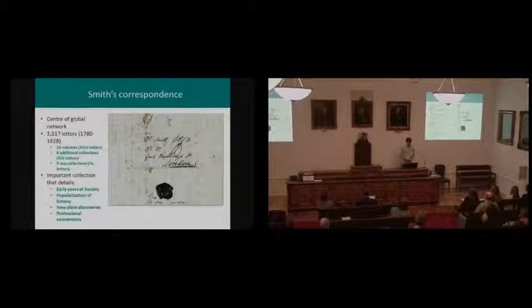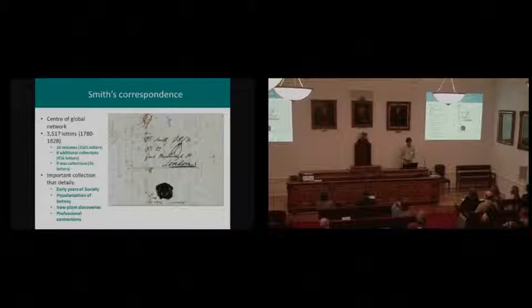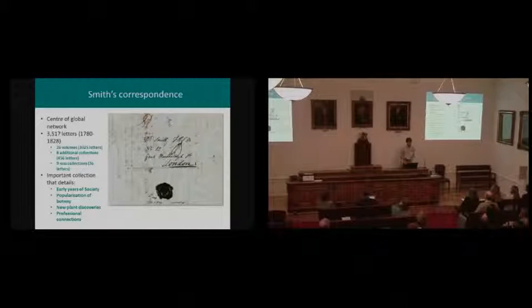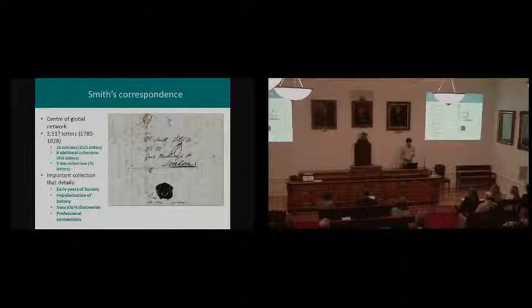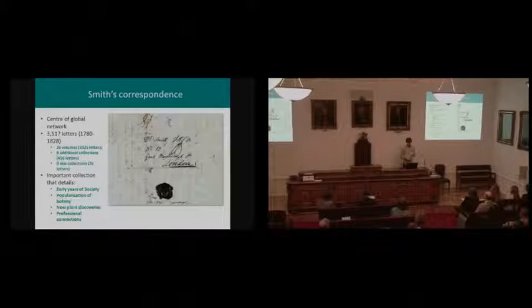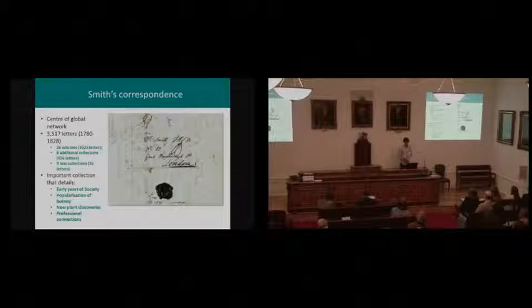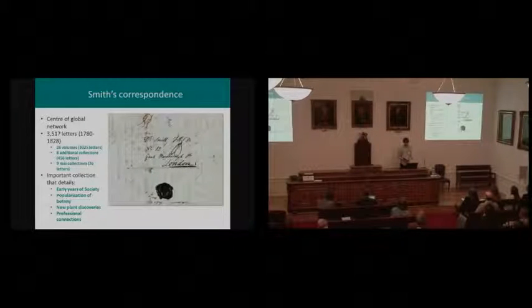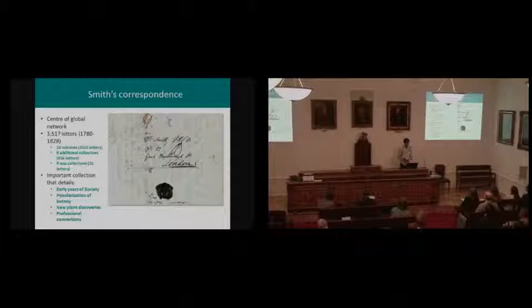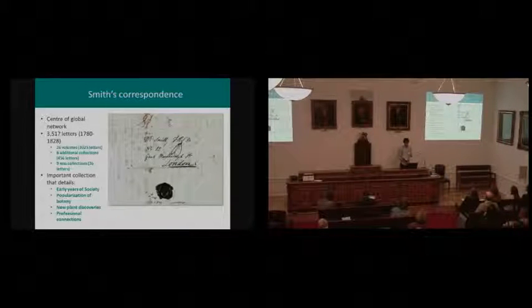The Linnaean Society holds the bulk of his correspondence, mostly the incoming correspondence, as he didn't keep copies of his own letters that he sent out. But in a few instances there has been a reunification of the ingoing and outgoing correspondence. The bulk of it is contained in 26 volumes which were donated to the society by Smith's widow, Pleasance, after his death.